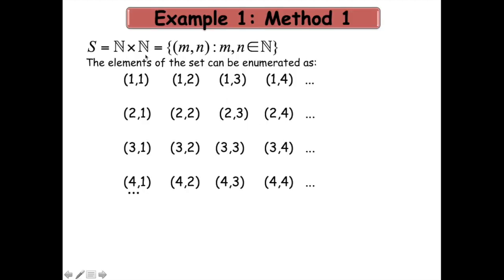The first example I am going to consider is the set N×N, which contains all pairs (m, n) such that m and n are natural numbers. I am going to enumerate the elements of this set as follows. In the first row, I will place elements where the first component is fixed to 1 and the second component varies as 1, 2, 3, 4, and so on.